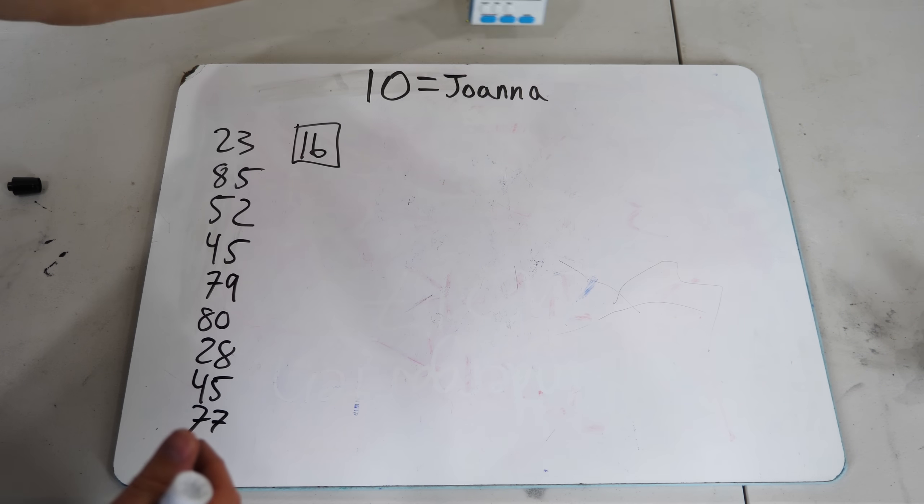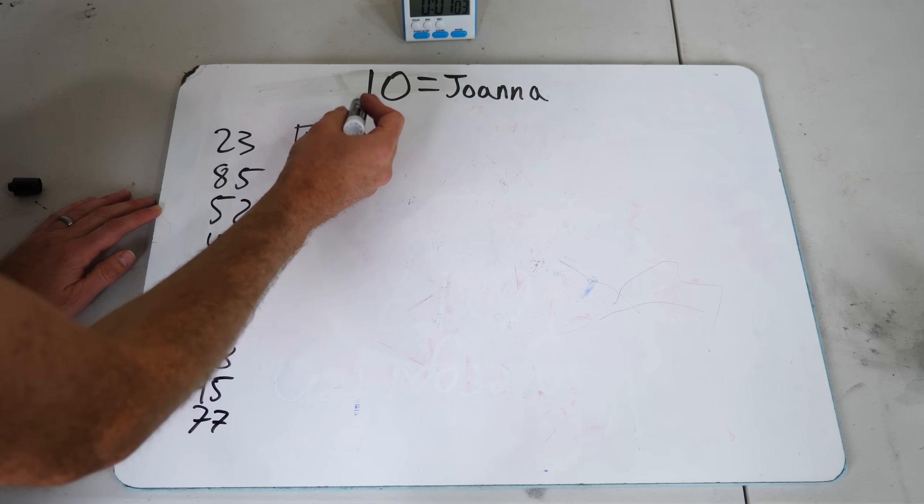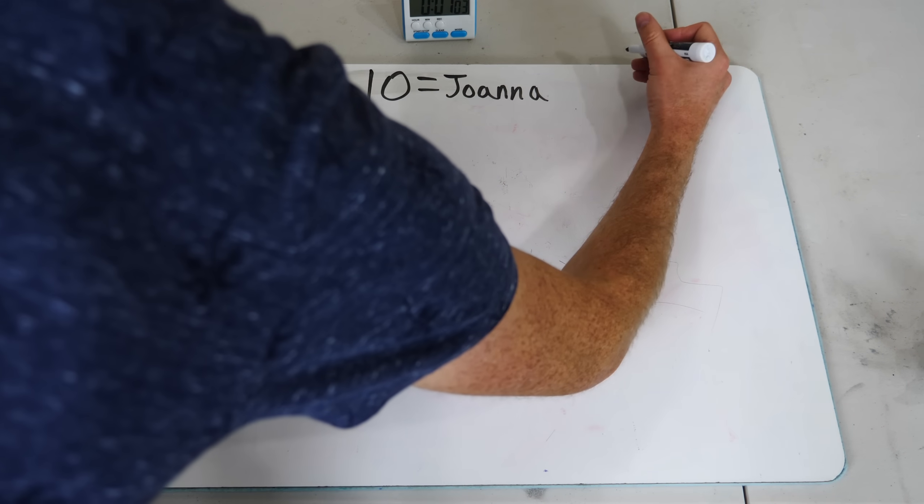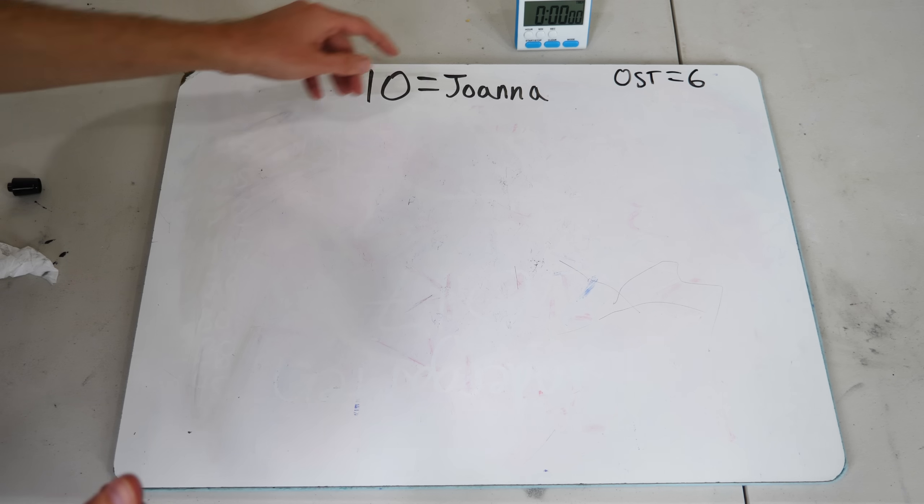Okay, so with the optimal stopping theory, I got six away from my best possible option. That's pretty good. Now let's try it two more times just to give me a little bit bigger sample set.